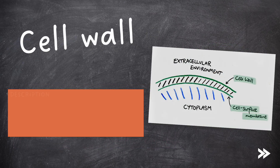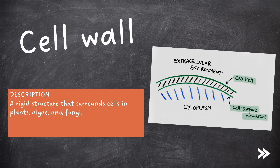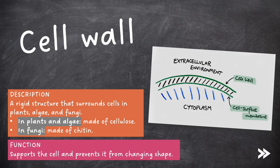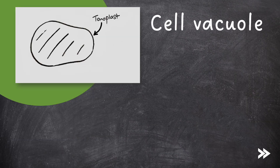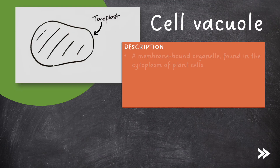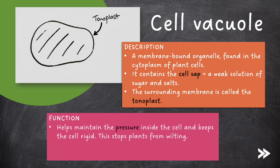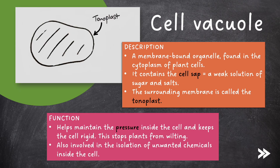Next we have the cell wall, which is a rigid structure that surrounds cells in plants, algae, and fungi. Note that in plants and algae it's made of cellulose, whereas in fungi it's made of chitin. The cell wall supports the cell and prevents it from changing shape. Finally, we have the cell vacuole, also known as the permanent vacuole. This is a membrane-bound organelle found in the cytoplasm of plant cells. It contains the cell sap, which is a weak solution of sugar and salts. The surrounding membrane is called the tonoplast. The cell vacuole helps maintain the pressure inside the cell and keeps the cell rigid, which stops plants from wilting. The vacuole is also involved in the isolation of unwanted chemicals inside the cell.